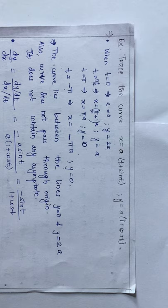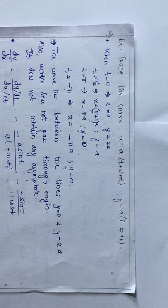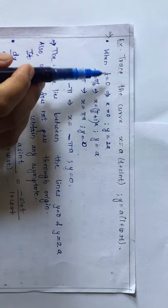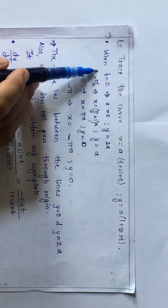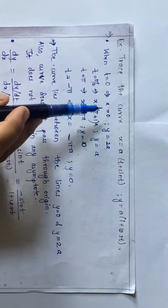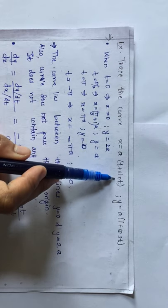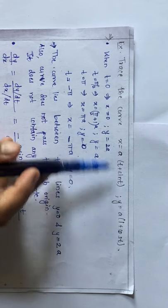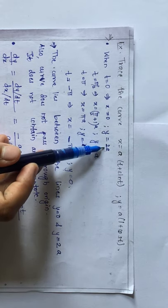The first rule says: for a parametric equation, find the limiting values — the greatest and lowest values — so that we know where the curve lies and between which two points. When t = 0, x = 0 (since sin 0 = 0) and y = 2a.